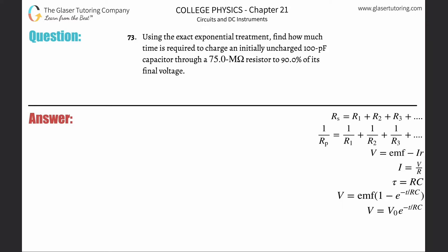Number 73: Using the exact exponential treatment, find how much time is required to charge an initially uncharged 100 picofarad capacitor through a 75 mega ohm resistor to 90% of its final voltage. First of all, we're talking about charging, so we have to use our charging formula, not our discharging one.